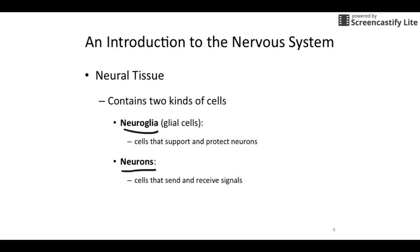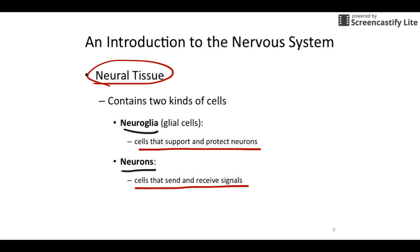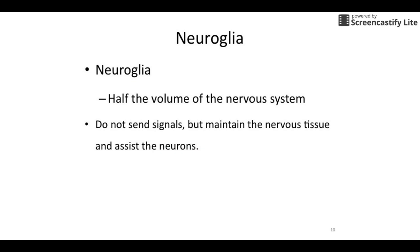Nervous tissue, or neural tissue, is composed of two types of cells. You've got the neuroglia, which are the general helper cells — we're going to show you exactly how they help in just a moment — and the neurons are the ones that actually send the signals. Neuroglia make about half the volume of the nervous system. They're the only ones that actually go through cell division and mitosis. They do not send signals, but they help maintain the nervous tissue and assist the neurons.